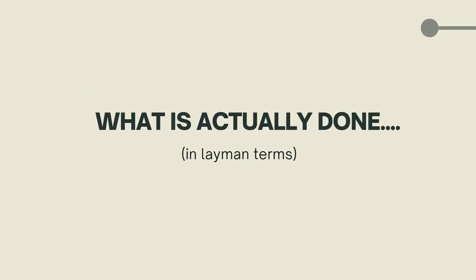What is actually done — what is the whole job behind it — in layman's language? Say suppose we take an example of a software company named A that has its software source code publicly available. First, what is source code? It is the part of software that most computer users don't ever see. It's the code that computer programmers can manipulate to change how a piece of software, a program, or application works. Programmers who have access to a computer program's source code can improve that program by adding features to it or fixing parts that don't always work correctly.